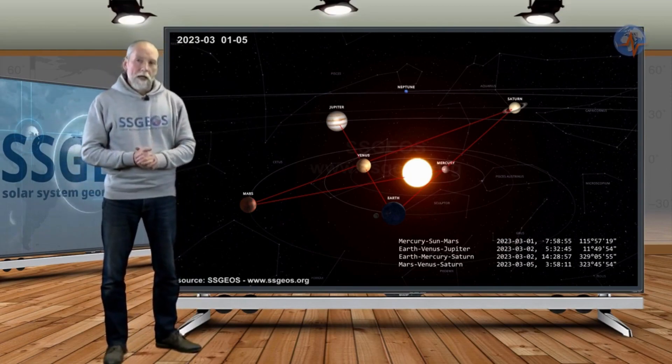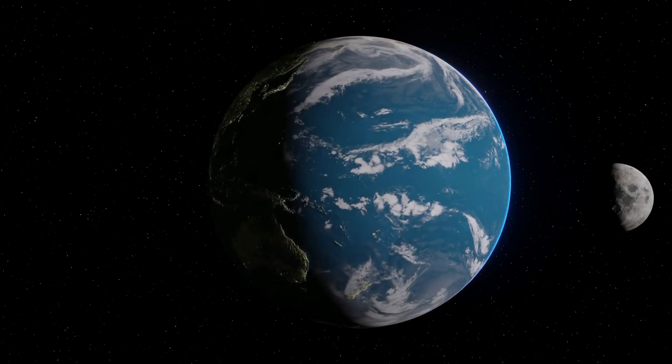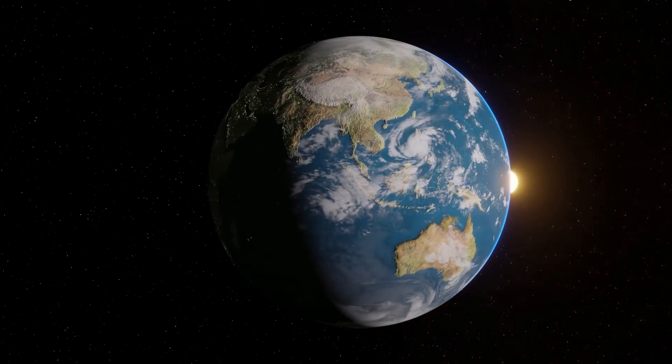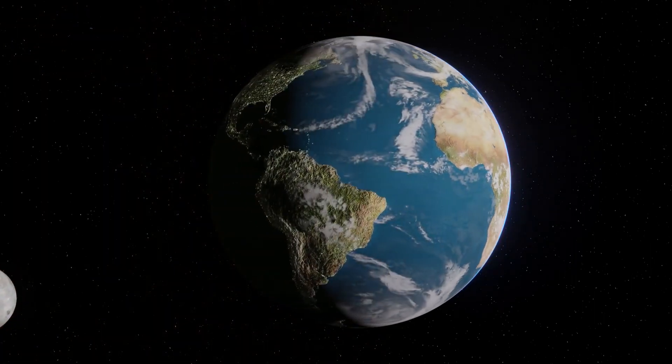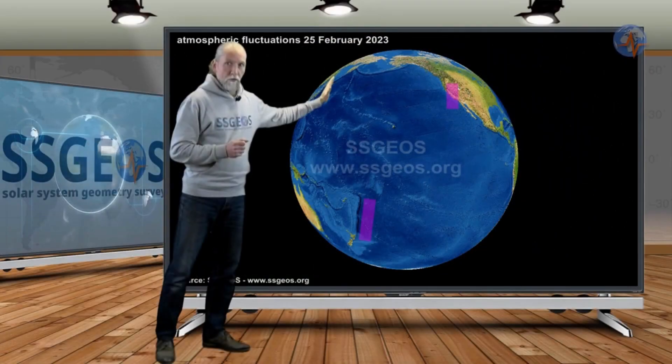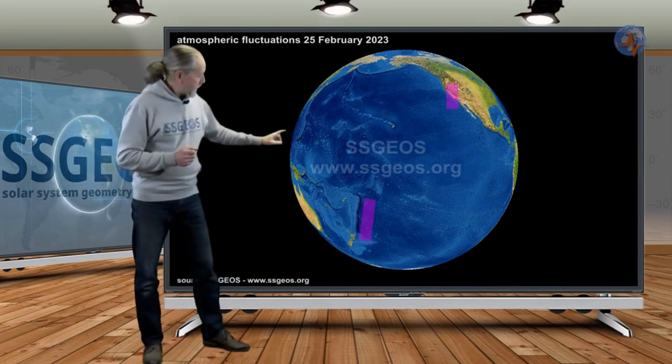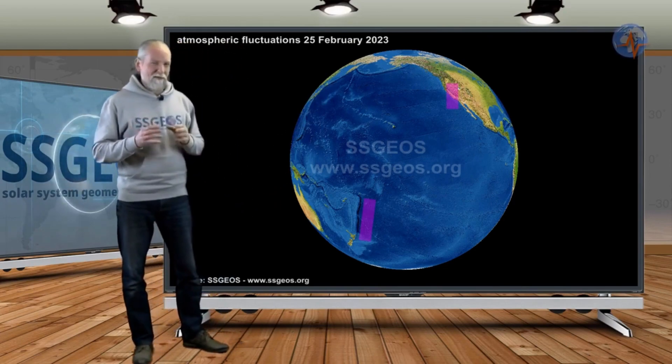A convergence of critical planetary geometry around the 2nd and 5th of March may result in large to very large seismic activity, possibly even a mega-thrust earthquake around the 3rd to 4th of March or 6th to 7th March, Frank Hoogerbeets said on his Facebook page.